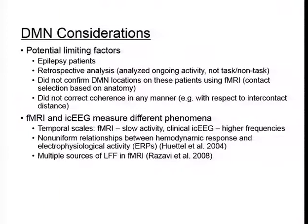We also did not confirm DMN locations in these patients using fMRI; contact selection was based on what the literature says about default mode network locations, applied to individual patient anatomy. We also did not correct coherence for intercontact distance, as we were interested in the raw magnitude squared coherence relationships.